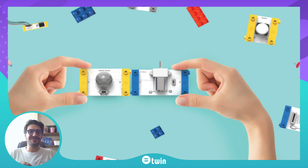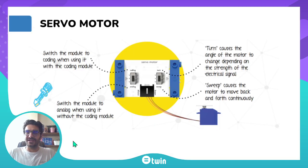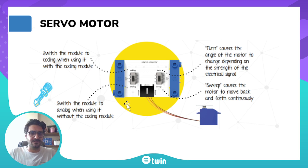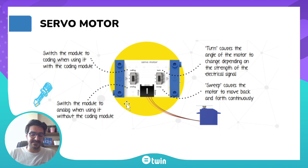I will give examples after we explore the servo motor and how it works. So the servo motor comes with two switches. One of them selects between coding and analog. If you want to use it with a coding module, then you need to switch it to coding. If you want to use it in analog, meaning that there's no coding module involved, you can use it in analog mode and still get use of the servo motor.